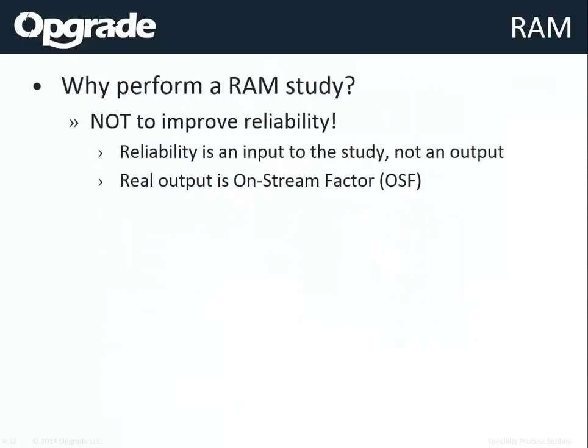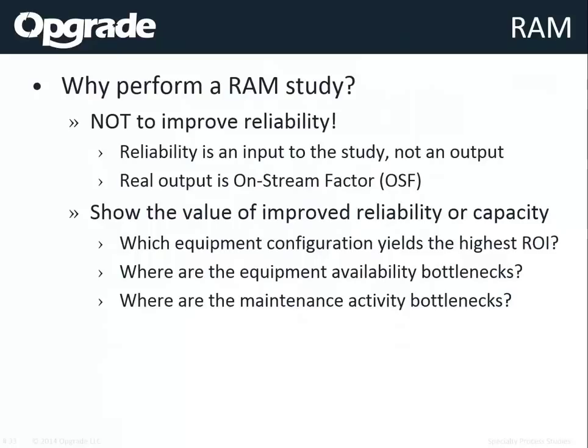With sufficient sample size you can say with some certainty what the mean on-stream factor is — that's the key result of a RAM study. A reliability study is not typically meant to make sure things keep running; usually it's to determine the value of increased reliability, the value of increased capacity, or how much production is lost if capacity decreases.